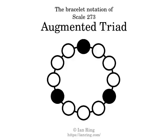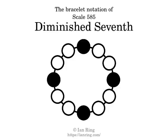Scale 273: Augmented Triad. Scale 585: Diminished 7th.